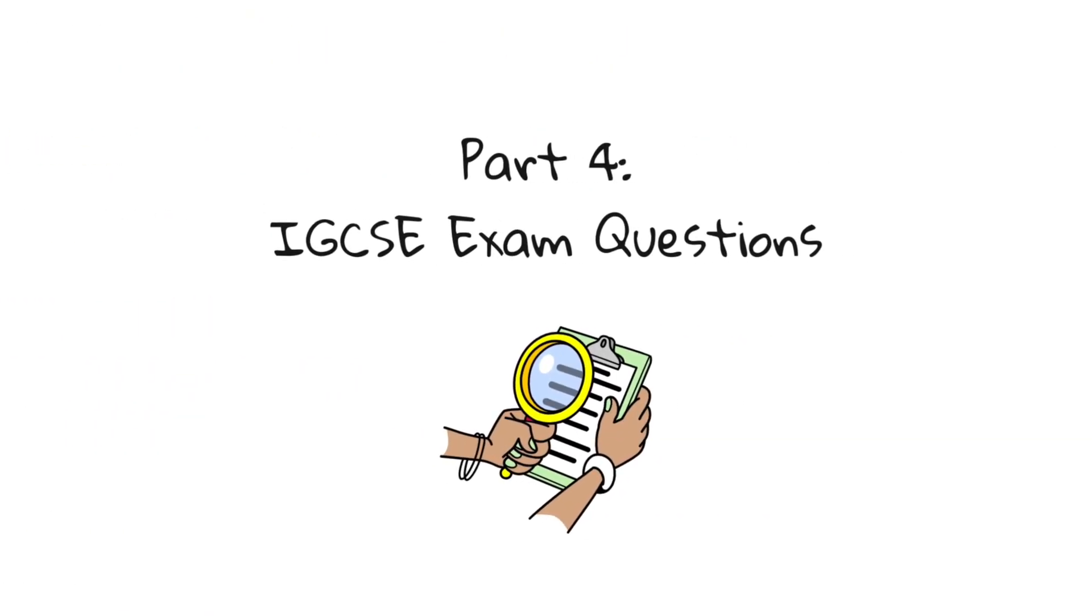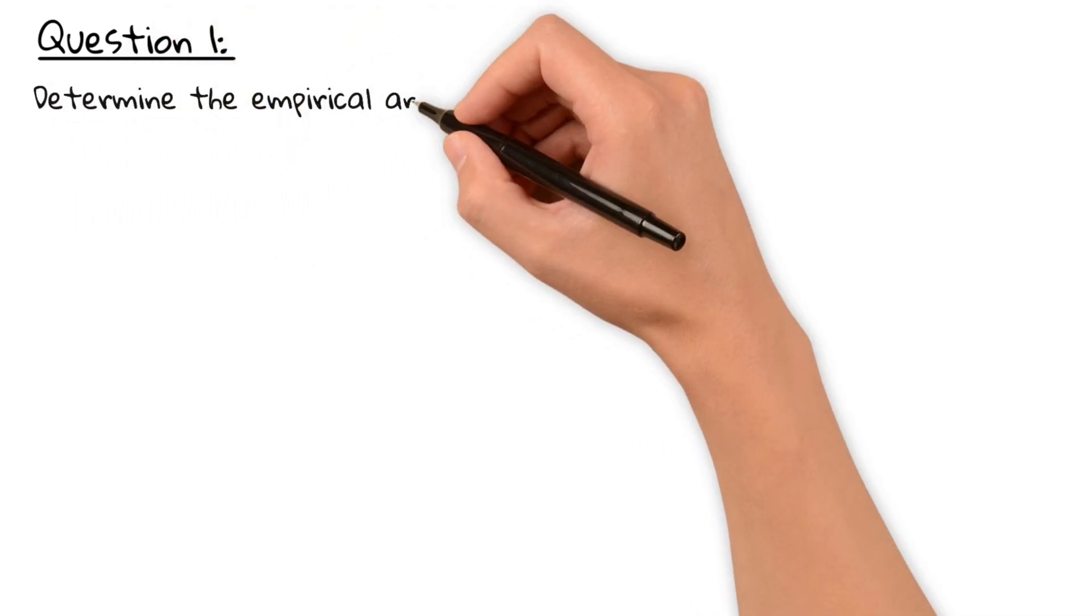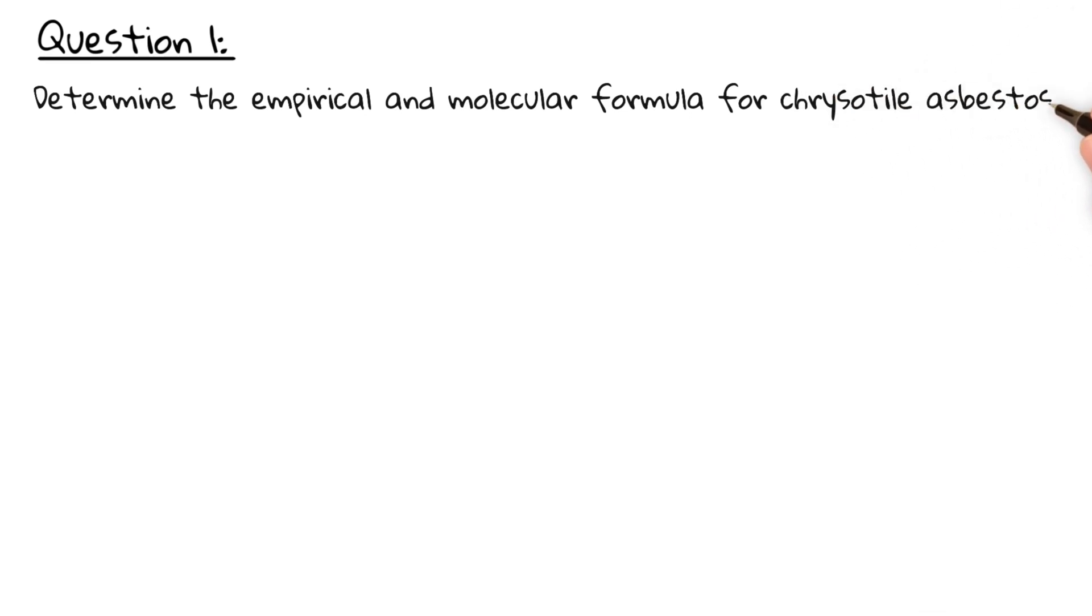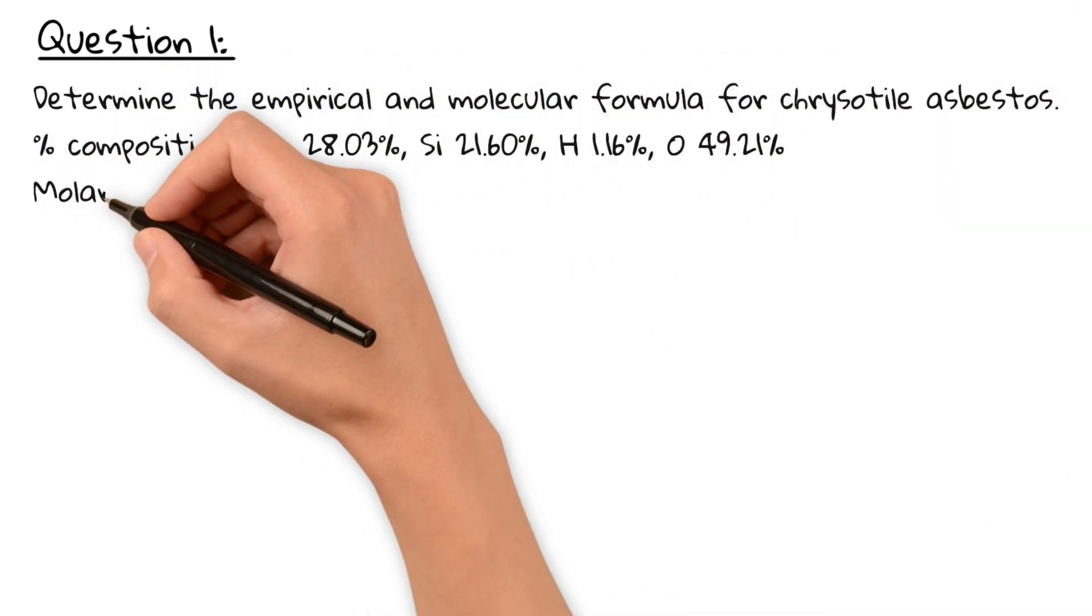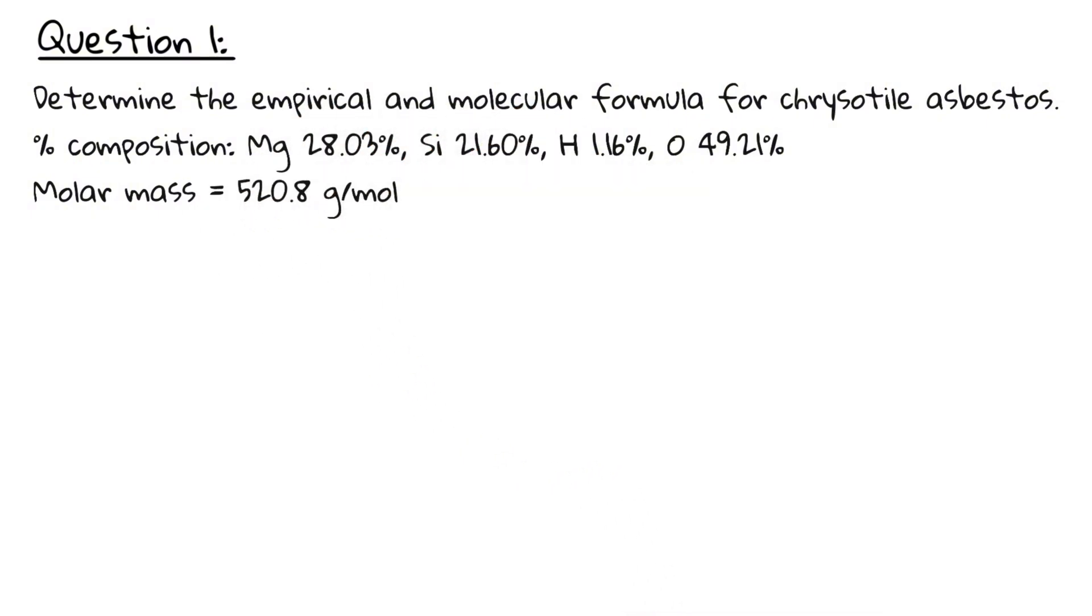Now let's do two IGCSE-style example questions. Question 1: Determine the empirical and molecular formula for Chrysotile asbestos with the percentage composition of magnesium 28.03%, silicon 21.6%, hydrogen 1.16%, oxygen 49.21%. The molar mass is 520.8 grams per mole. Pause the video and give it a try.